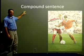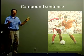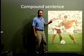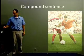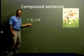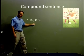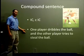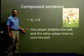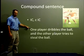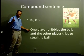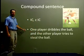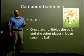Another example of a compound sentence, where I have two independent clauses. Here I have one man dribbling the ball, and another guy trying to steal the ball. So remember, the compound sentence is one independent clause, a comma, a coordinating conjunction, and another independent clause. 'One player dribbles the ball, and the other player tries to steal the ball.' So two independent clauses — first: one player dribbles the ball; second: the other player tries to steal the ball — and before 'and,' I have the comma.